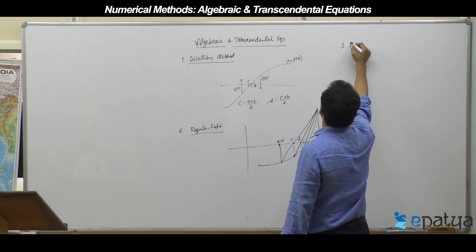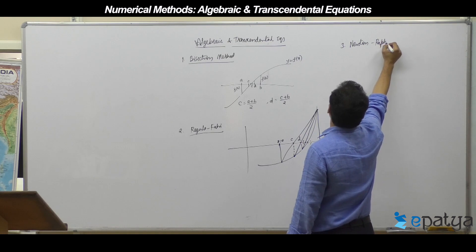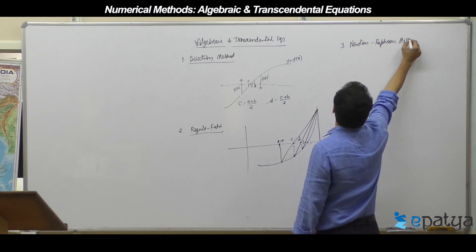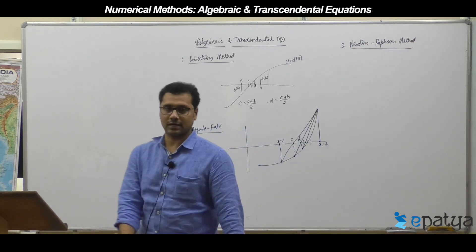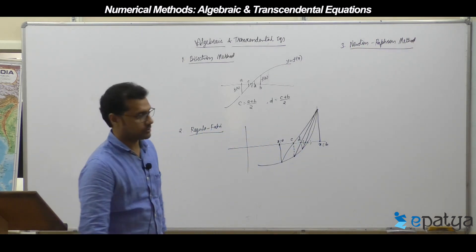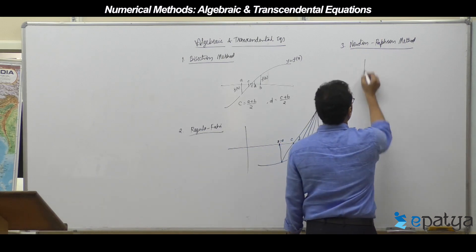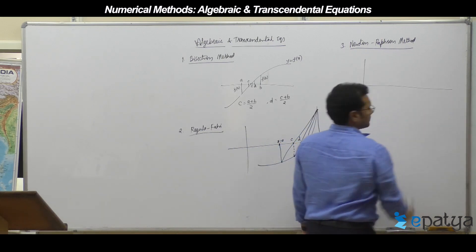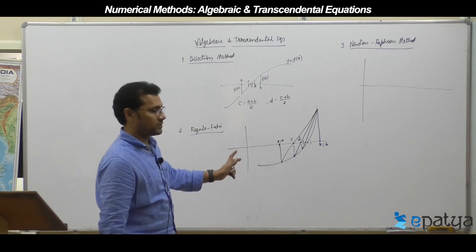The third one is called the Newton-Raphson method. It has its own strategy.